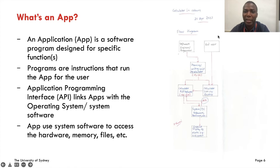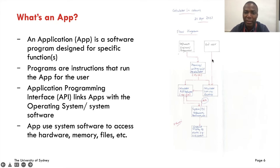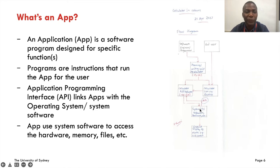Once we build the script, we're going to create the software into an executable file and also create a shortcut or icon on the desktop. When the end user comes in, they only need to click the icon which links them to the executable file within the computer. This executable file interacts with the operating system as well as the system software to give us an output or visual display. Between the calculator software and the system software, we have what's called the application programming interface.